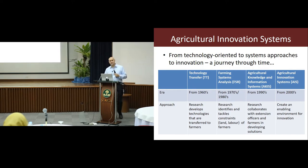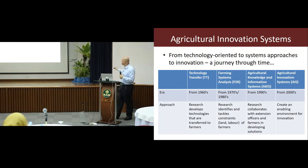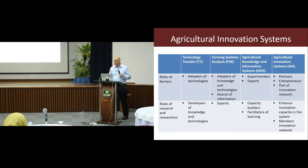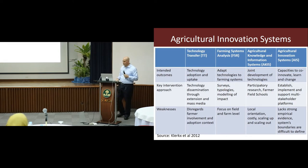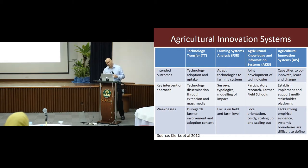You can clearly see the main headings in terms of the approach, and for each approach there is a distinct role for farmers, a role for research and researchers, intended outcomes, key intervention areas, and weaknesses. It's the same Clerks et al. study from 2012 that mapped this typology.